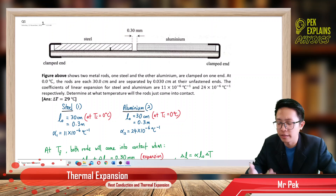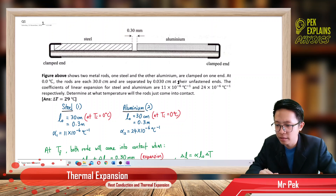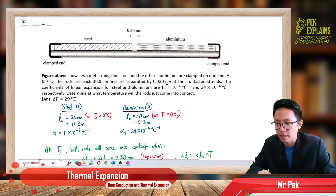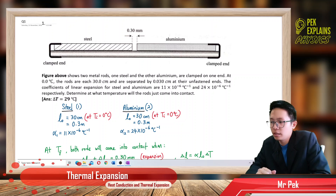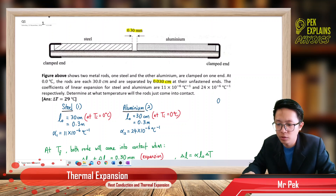We can see both rods are clamped at one end, but the other end of each rod is not clamped. The unfastened ends are separated by 0.03 cm. The problem also states 0.3 mm — these two values are the same, just differing by unit. 0.03 cm is the same as 0.3 mm.